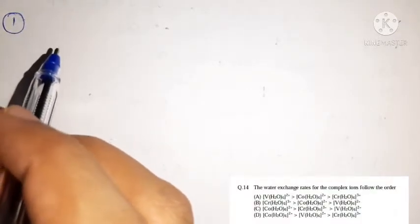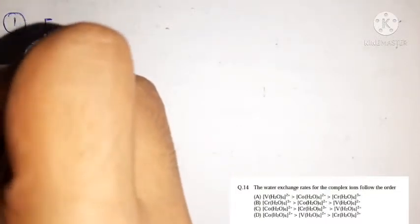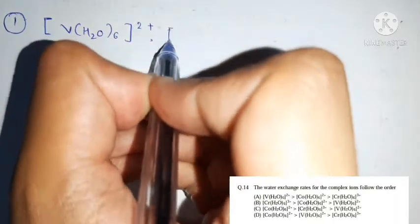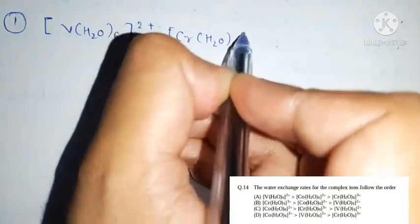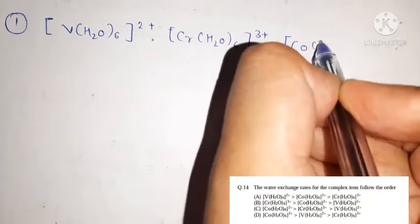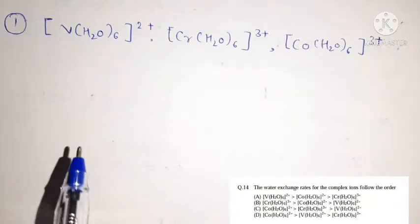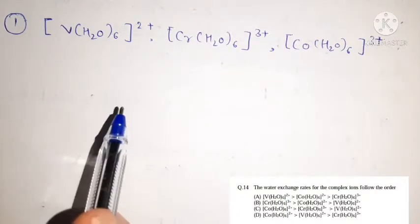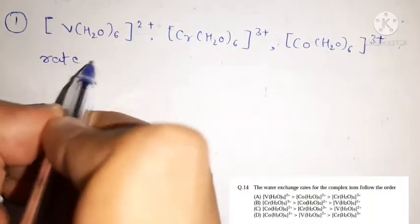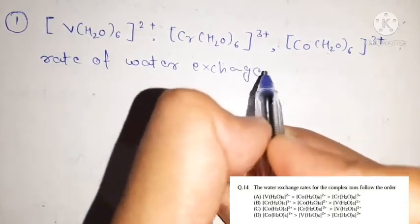We have three complexes given: V(H₂O)₆²⁺, Cr(H₂O)₆³⁺, and Co(H₂O)₆³⁺. We must find the order of the water exchange reaction rate for these three complexes.